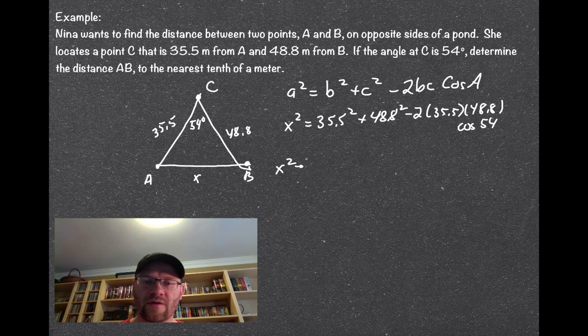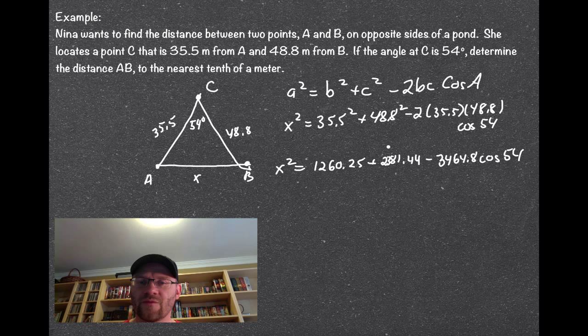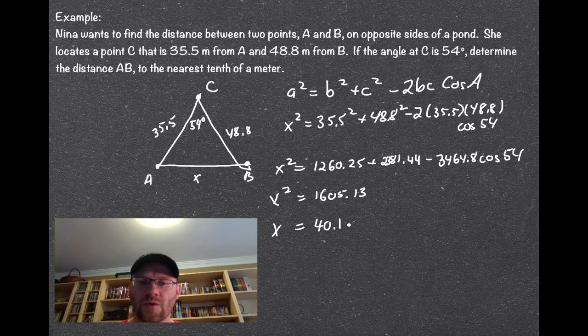So if we expand this thing, 35.5 squared is 1260.25, 48.8 squared is 2381.44, and negative 2 times 35 times 48.8 is negative 3464.8 times cosine 54. If we multiply this number by cosine 54 and subtract it from these two numbers, we get X squared equaling 1605.13, and if we take the square root of both sides to get X, we get 40.1 meters.